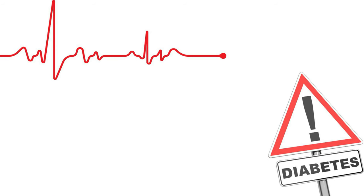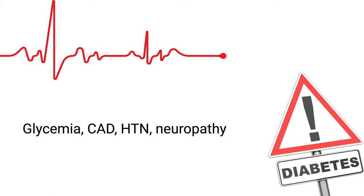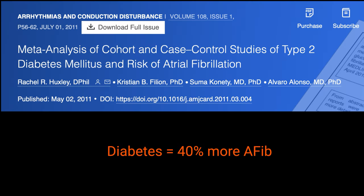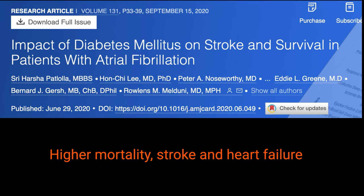Is diabetes related to arrhythmia? Yes. Diabetes may increase the risk of cardiac arrhythmia via several factors, including associated comorbidities of hypertension and coronary disease, or diabetes-associated factors like glucose control and diabetic neuropathy. These arrhythmias may be atrial fibrillation, ventricular arrhythmia, or sudden death. Diabetes increases the risk of atrial fibrillation by 40%. When both conditions coexist, this means a higher rate of mortality, heart failure, and stroke.